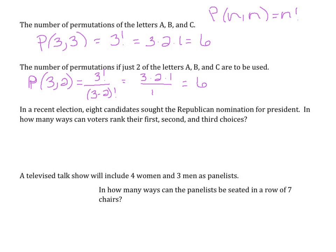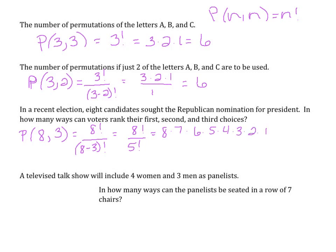In a recent election, eight candidates sought the Republican nomination for president. In how many ways can voters rank their first, second, and third choices? We want P(8, 3) — eight candidates, three rankings. This equals eight factorial over (eight minus three) factorial, which is eight factorial over five factorial. Canceling the common terms leaves us with eight times seven times six, which is equivalent to 336 ways.